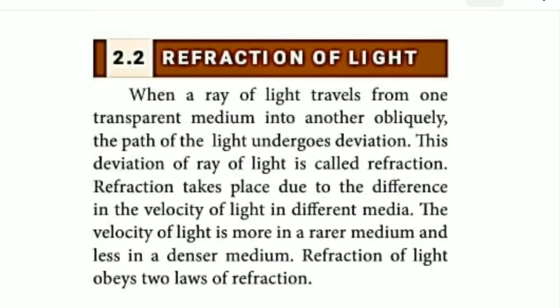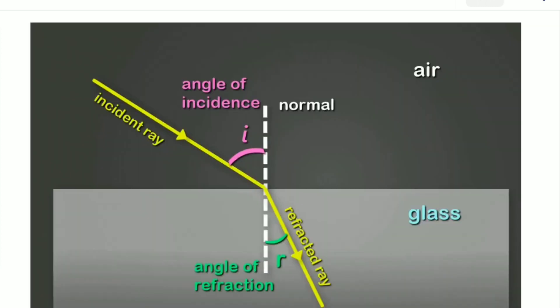Refraction: When a ray of light travels from one transparent medium into another obliquely, the path of light undergoes deviation. When a ray of light travels from one transparent medium to another at an angle (not perpendicular), it deviates from its path. This deviation or bending of light is called refraction.